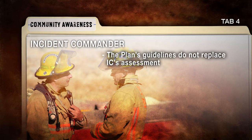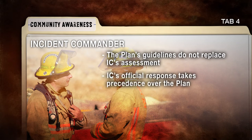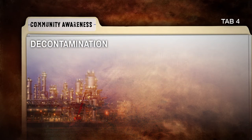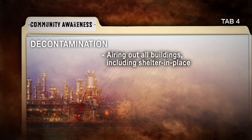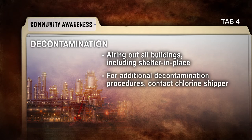Guidelines should not be viewed as a replacement for the incident commander's view and assessment of the incident scene. The IC's official response plan should take precedence over the protective plan. Once the event has concluded, decontamination of the affected area should be implemented by airing out all buildings, including the shelter-in-place locations, after chlorine has been cleared. Additional information on how to proceed with decontamination of affected areas can be supplied by contacting your chlorine shipper.